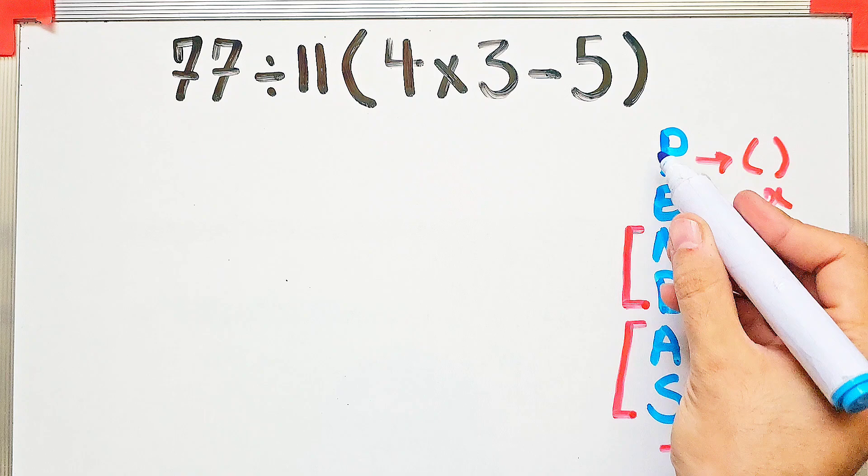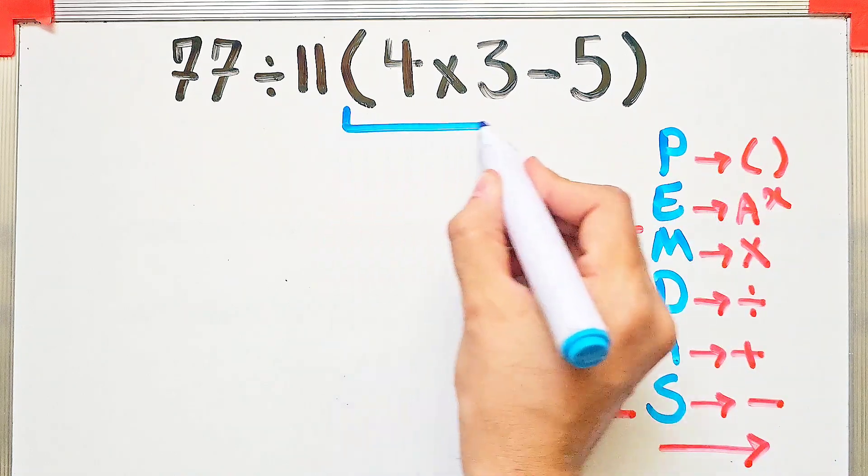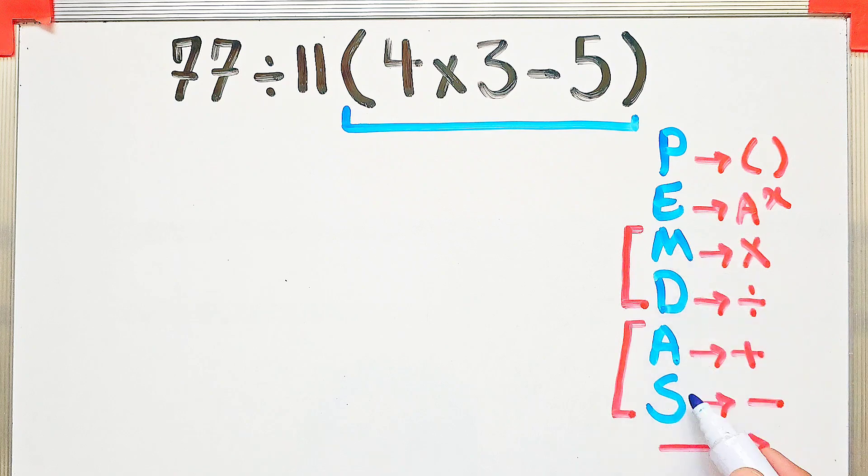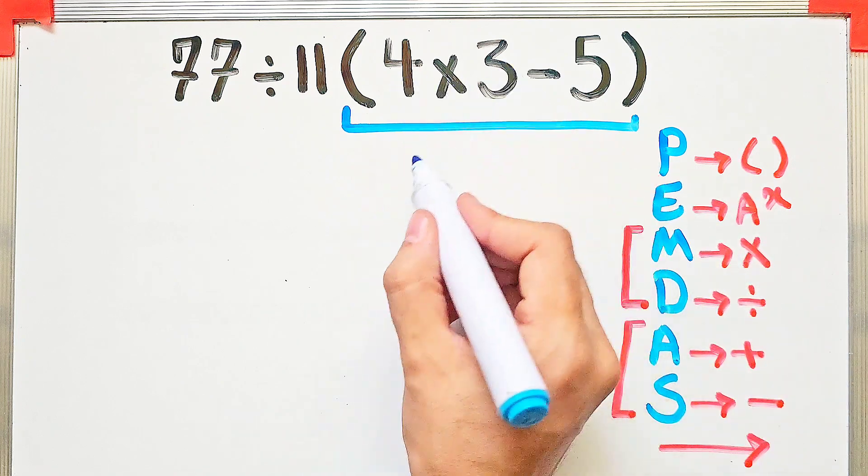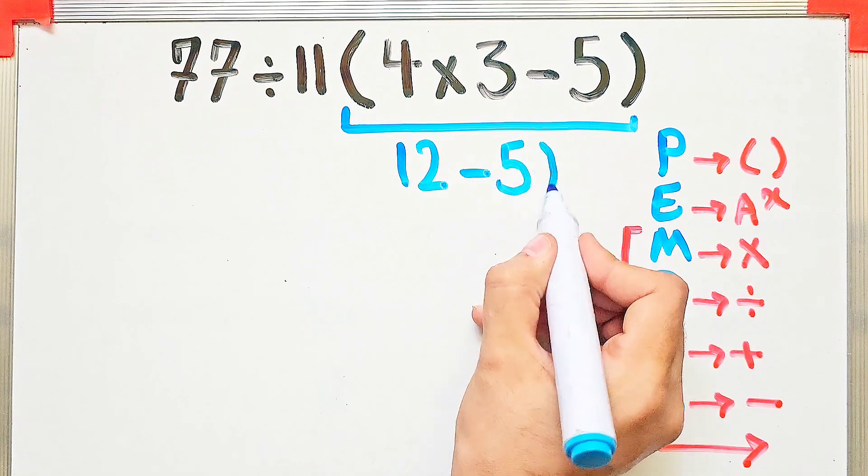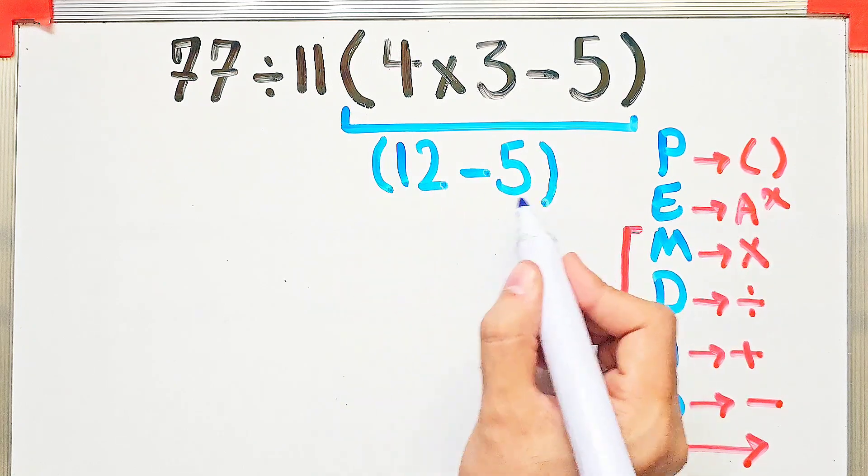According to this rule, first we simplify the parentheses. Inside the parentheses we have multiplication and subtraction. First we do multiplication because the multiplication has higher priority than subtraction.